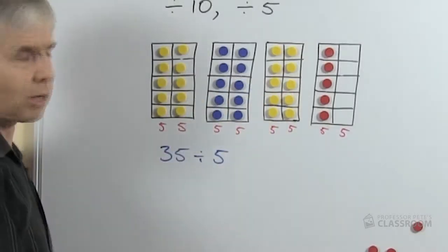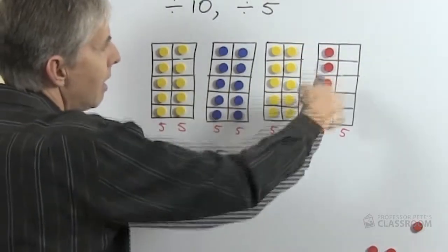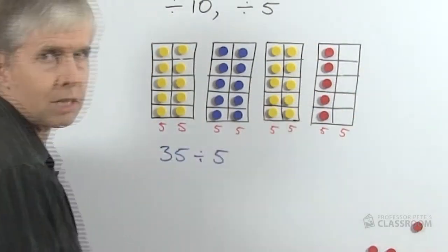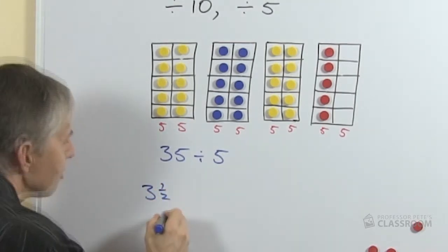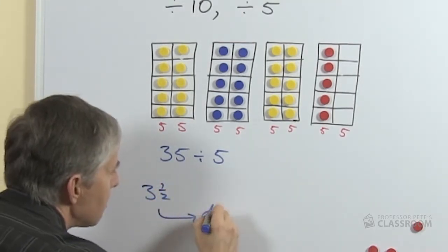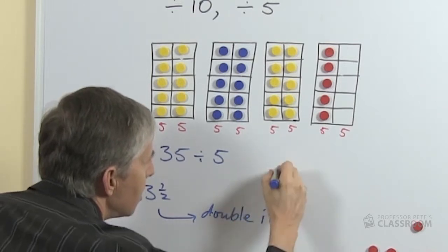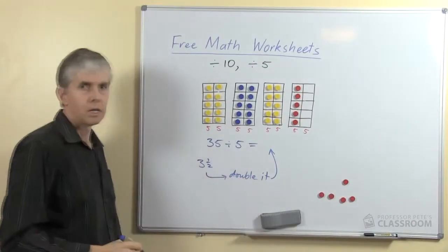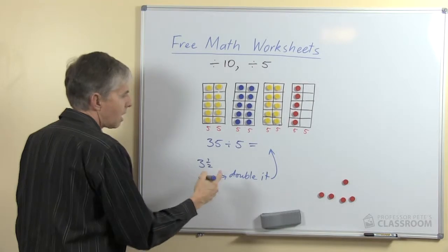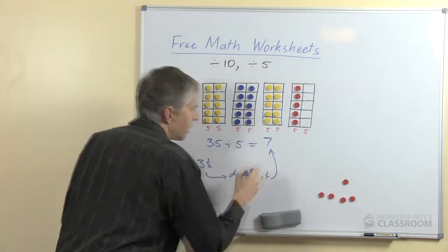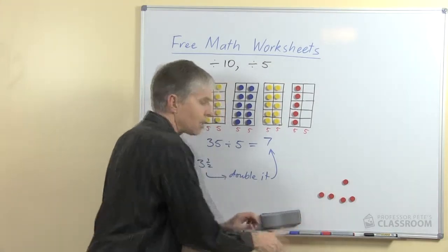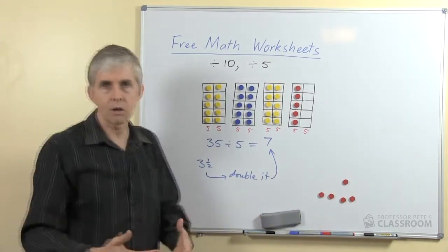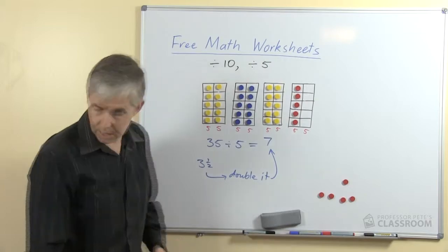Because we could say how many tens do we have? We've got 3 tens here. How much of a 10 is the 5? Well, it's half a 10. So what if we took 3 and a half and doubled that? What will we get? Well, double 3 is 6, double a half is 1, so of course double 3 and a half is 7. So the strategy works whether it's a number ending in 0 or a number ending in 5. None of that's too difficult.